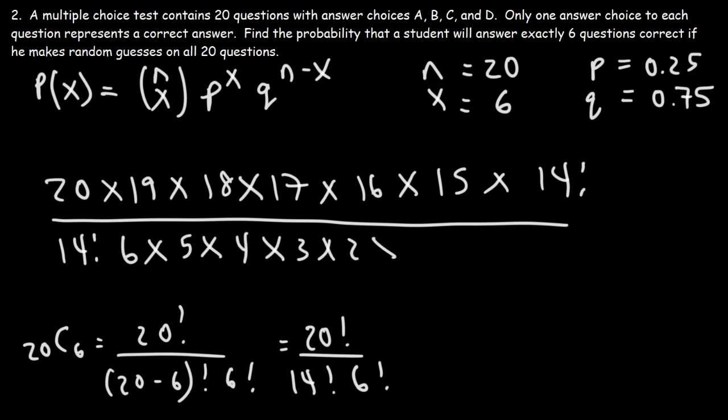Now try Part B. What is the probability that fewer than five students out of the 30 selected are taking algebra? Since x must be less than 5, x can be 1, 2, 3, or 4 — not 5. We need to calculate the probability for each value and then add them up.